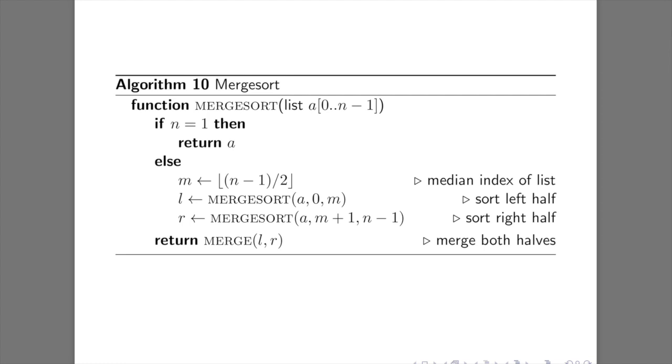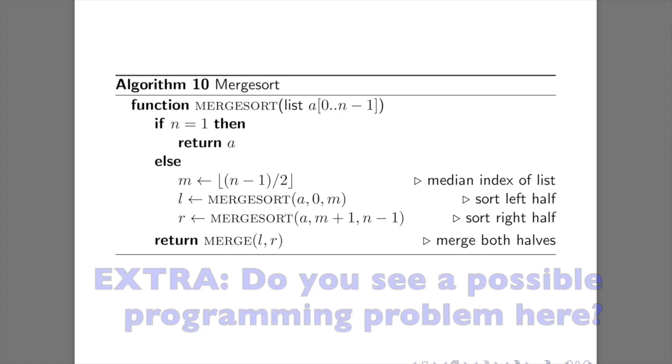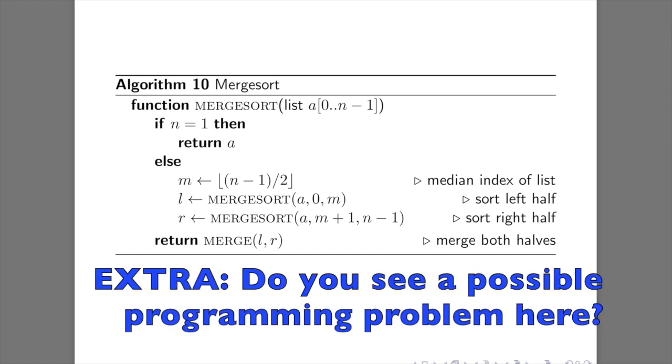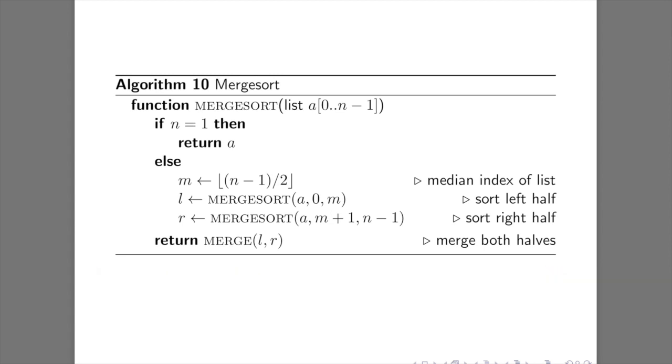So here's some pseudocode for merge sort. It takes in a list of size n. If n is 1, then it does nothing. Otherwise it chooses the median index of the list. If the list has even size, then it's actually going to choose the first of the two possible medians. It splits into a left and a right sublist, the left one going right up to the median, and the right one being the rest of it. Sorts those recursively, then merges the two together and returns that.